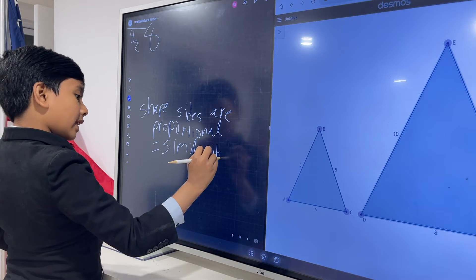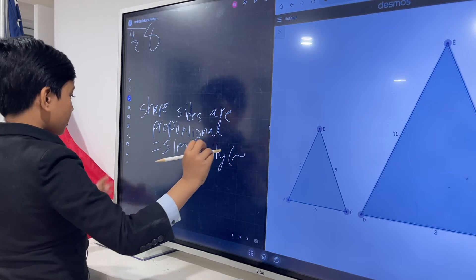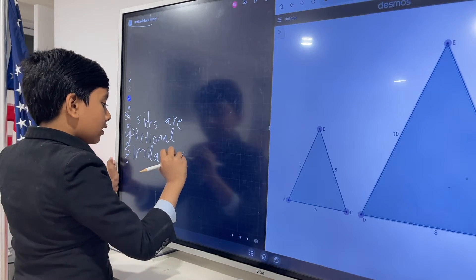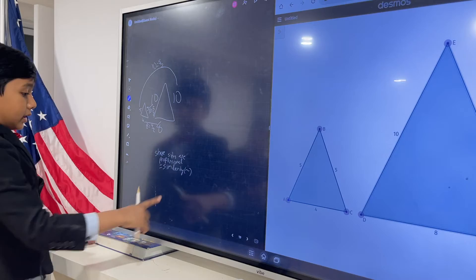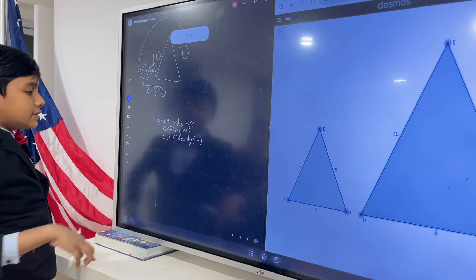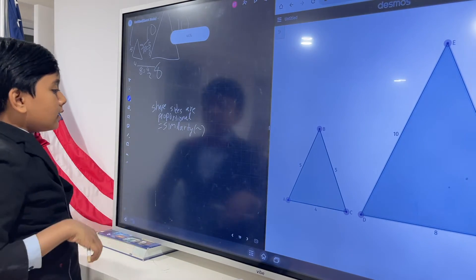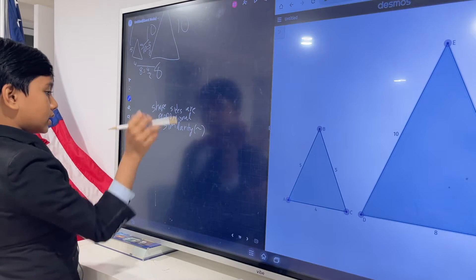And it's represented with the tilde sign. Fun fact, I actually didn't know what this was called for a long time. I thought it was the hyphen, but it's not the hyphen. So shapes sides are proportional, similarity.